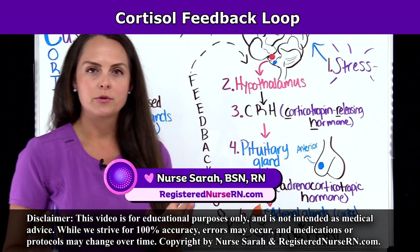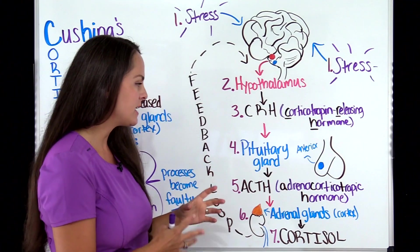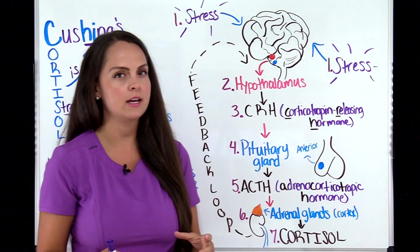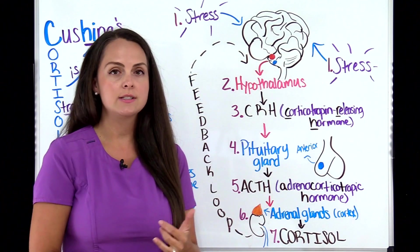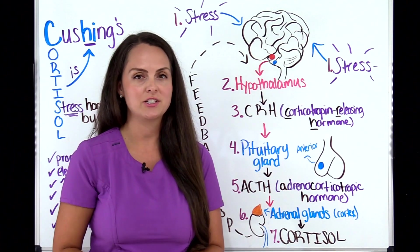Let's talk about how cortisol is produced. How do we even get this substance in our body? Understanding this is going to help you understand the difference between Cushing syndrome and Cushing disease and why certain lab work is ordered on these patients.